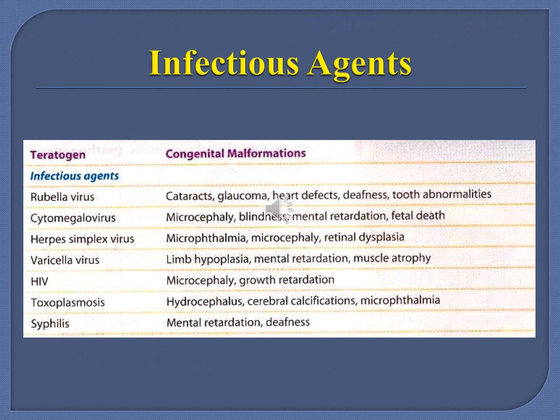These viruses are capable of giving rise to congenital malformations in various organs. Rubella virus can cause cataract and glaucoma; cytomegalovirus causes microcephaly; herpes and varicella virus can cause limb hypoplasia; toxoplasmosis causes hydrocephalus; and syphilis causes mental retardation.